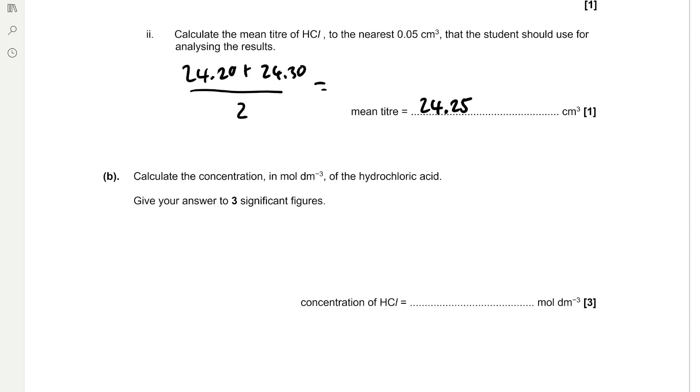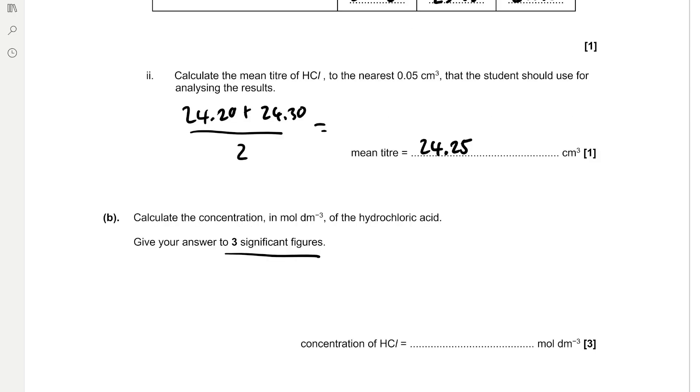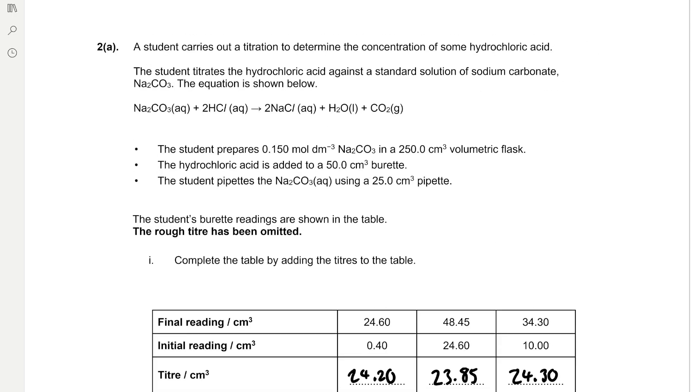Calculate the concentration in mol per dm³ of the hydrochloric acid to three significant figures. We've got the volume of HCl, and to find the concentration we need the moles because concentration equals moles divided by volume. We've got 25 cm³ of sodium carbonate using a 25 cm³ pipet, and the sodium carbonate is 0.15 mol per dm³. The moles of sodium carbonate equals concentration times volume. So that's 0.15 times 25 over 1000 to convert to dm³, which is 3.75 × 10⁻³ moles.